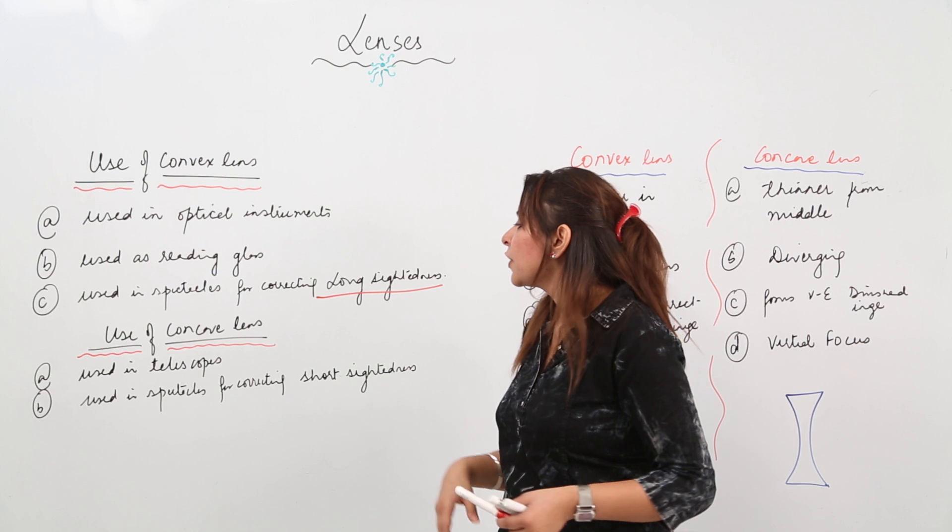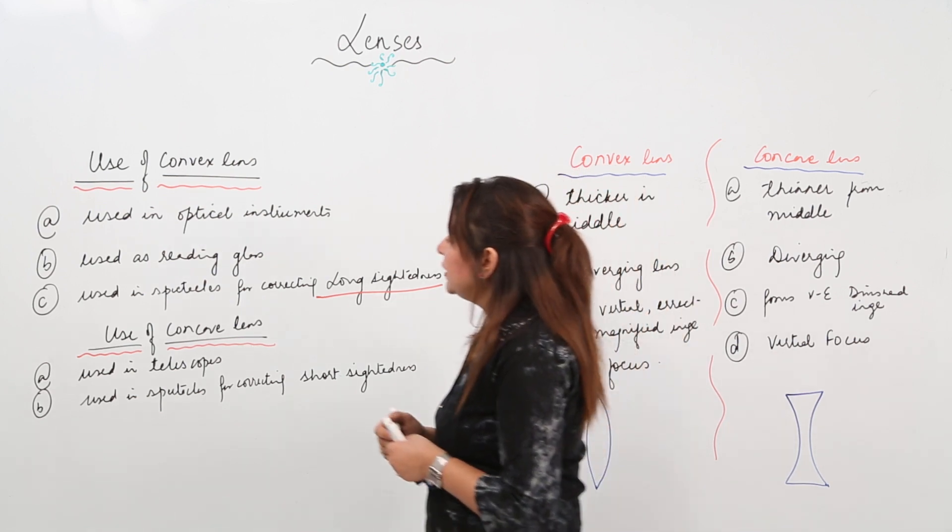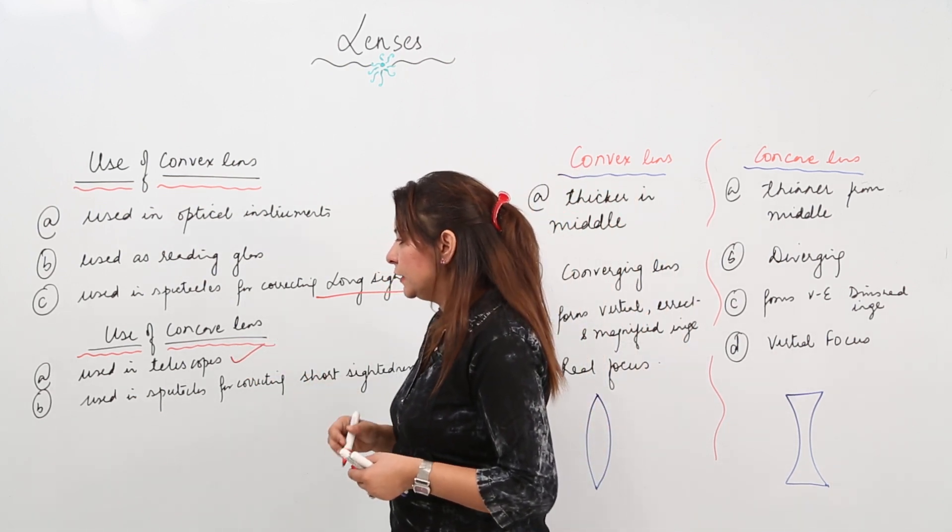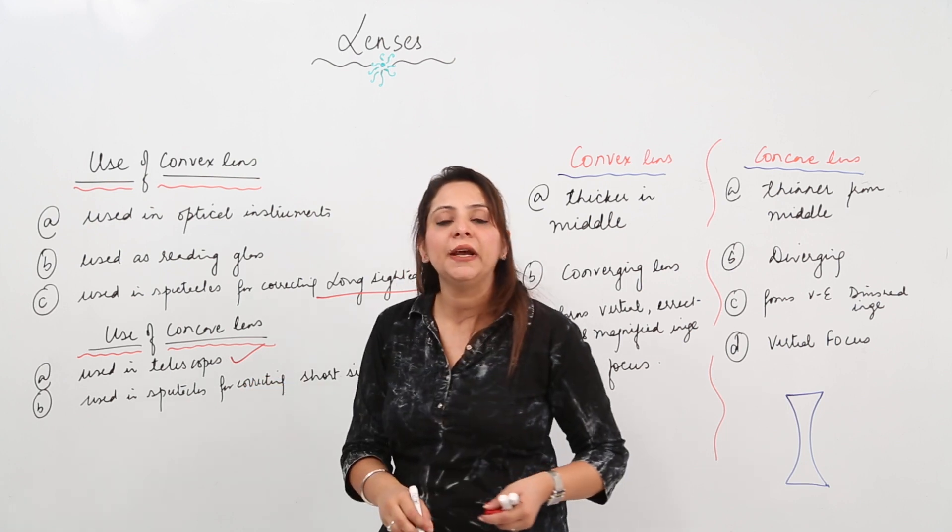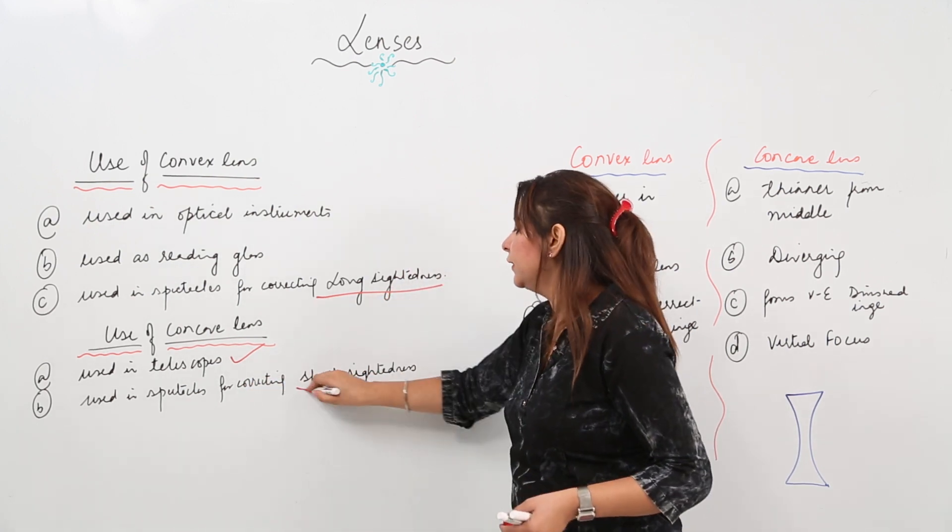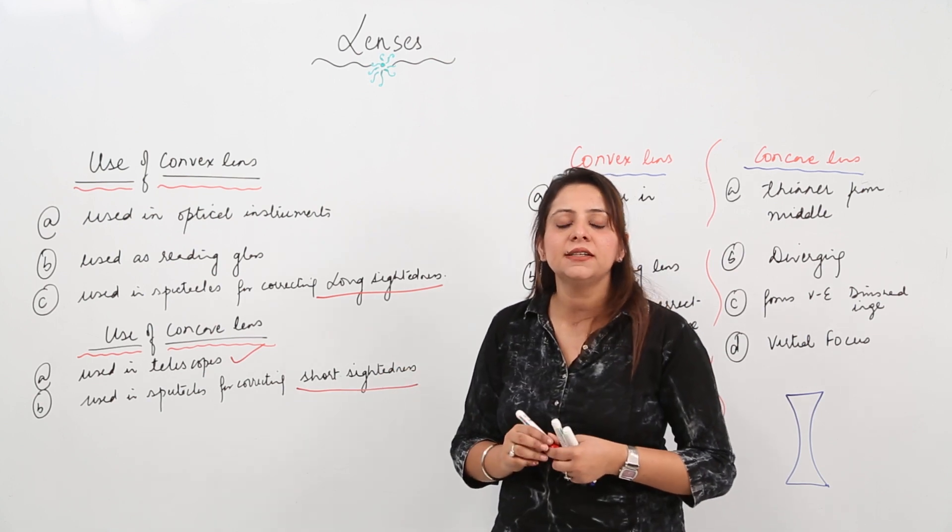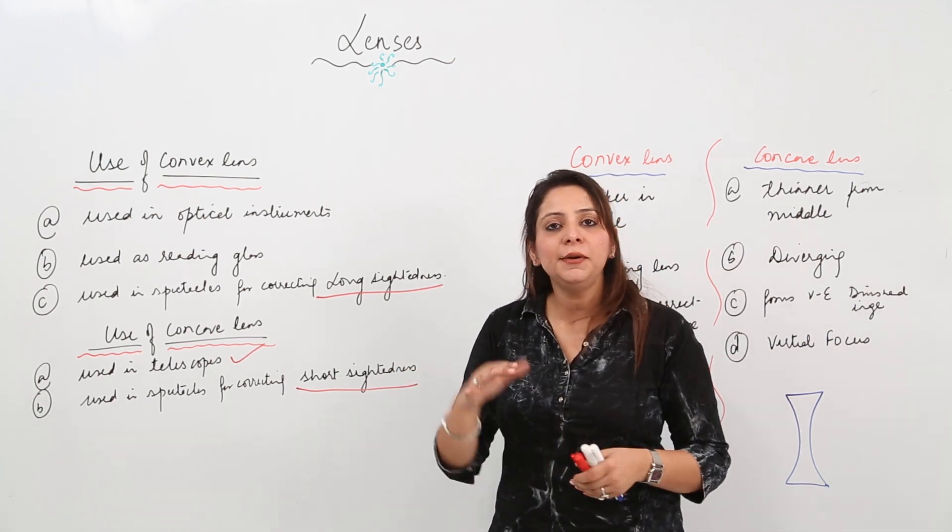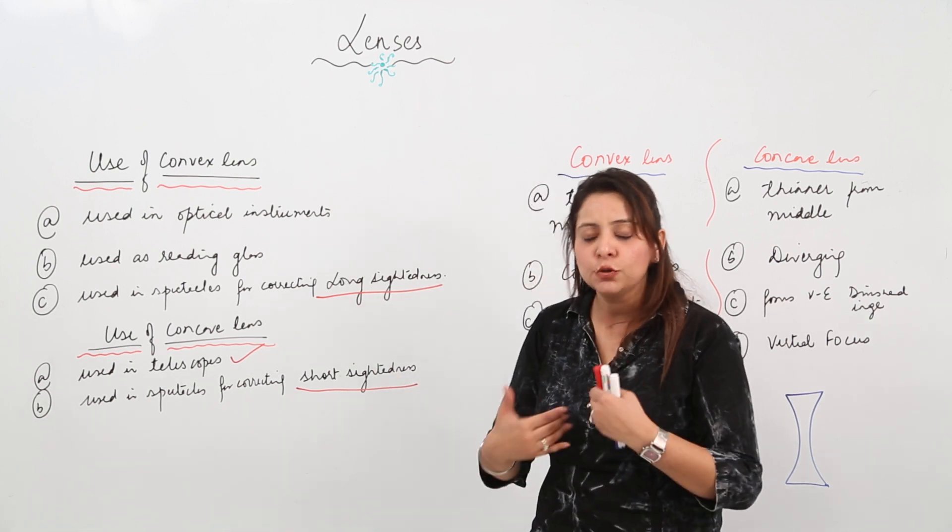Use of concave lens: it is being used in telescopes and it is also used in spectacles. Like convex lens is used in correcting long-sightedness, concave lens is used in correcting short-sightedness. Short-sightedness is where a person can see nearby clearly but cannot see far off clearly.